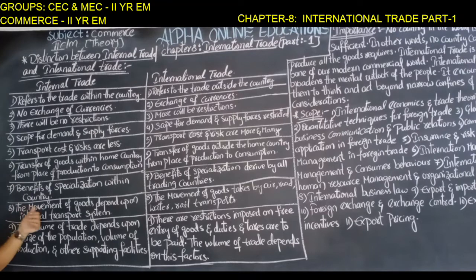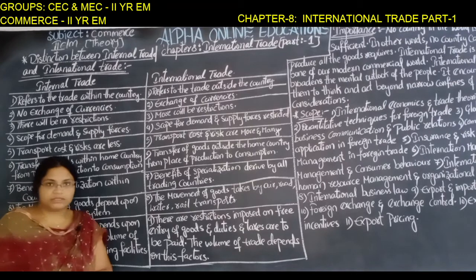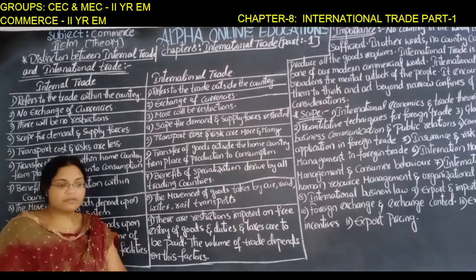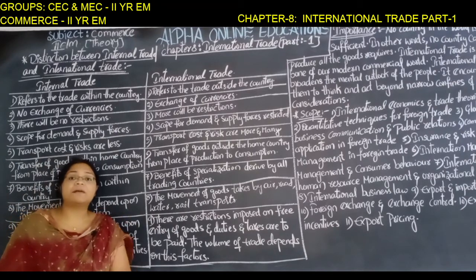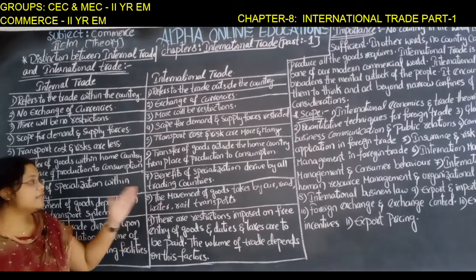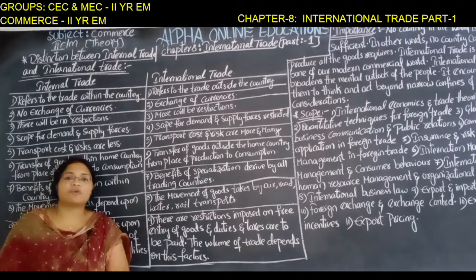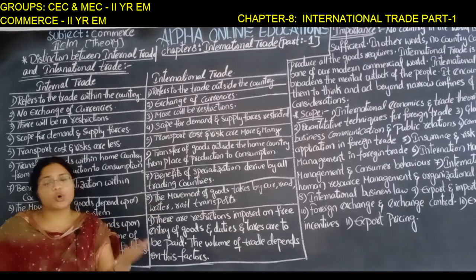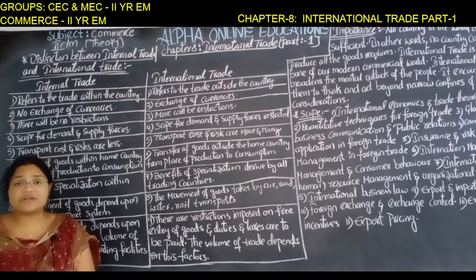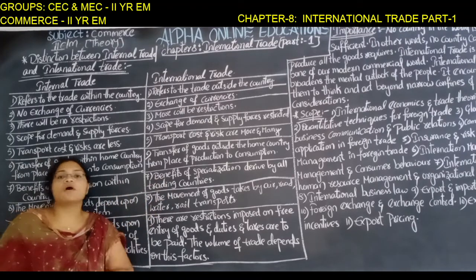In internal trade, the movement of goods depends completely upon the internal transport system. In international trade, the movement of goods takes place by railways, roadways, waterways, and airways.